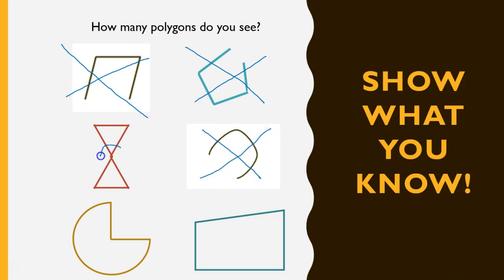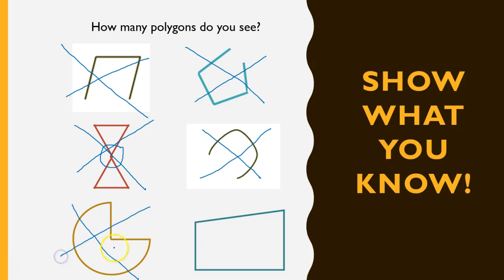Let's look at these. This one crosses — we're not supposed to cross if it's a polygon, so this is not a polygon. Now this is closed right here, but this is a curved line. We need straight lines, so this also is not a polygon. We're going to cross that one off too. Now this one — this is closed, the sides are straight, it has three or more sides. Okay, I think we got a winner! We got one polygon on this screen. So if your answer was one, you got that right.